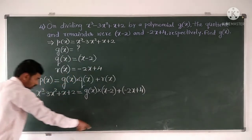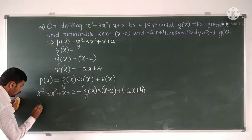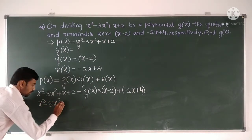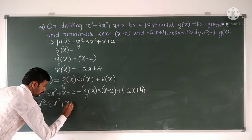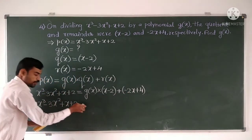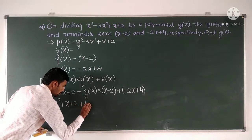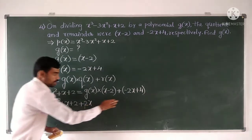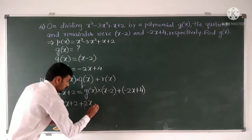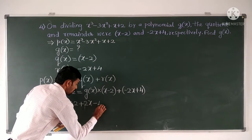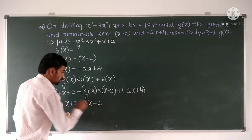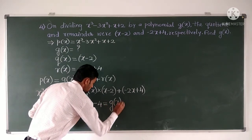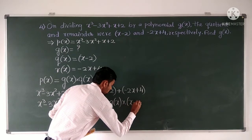We shift the remainder terms to the LHS. X³ minus 3X² plus X plus 2, shifting minus 2X to this side gives plus 2X, and shifting plus 4 to this side gives minus 4. This equals G of X into X minus 2.